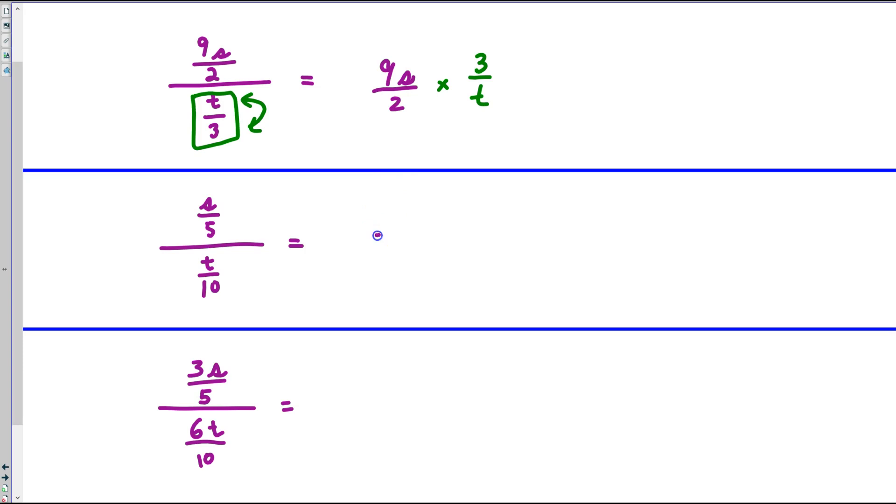In the next case, we start with s over 5, and instead of dividing by this fraction, we multiply by the reciprocal, 10 over t.